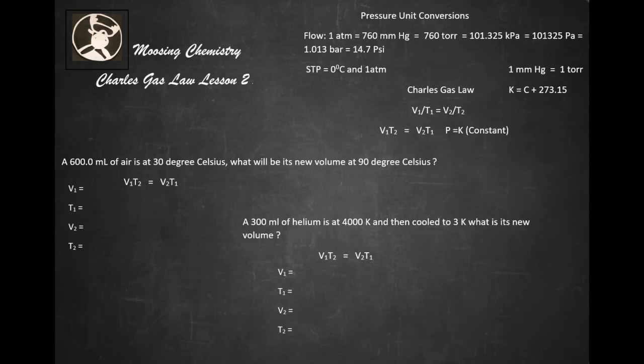Here are pressure unit conversions. One atmosphere equals 760 millimeters of mercury, which equals 760 torr, which equals 101.325 kilopascals, which equals 101,325 pascals, 1.013 bar, and 14.7 pounds per square inch. STP is at zero degrees Celsius and one atmosphere. One millimeter of mercury equals one torr. Remember that Kelvin is C plus 273.15.